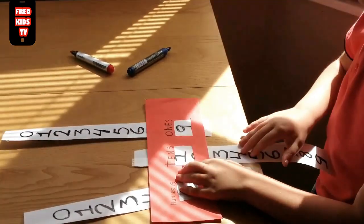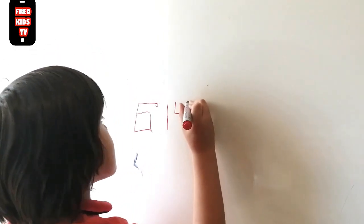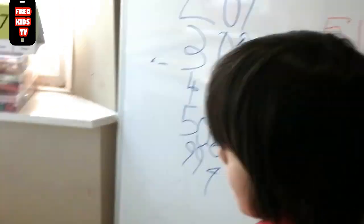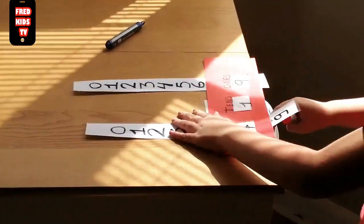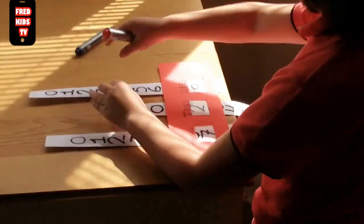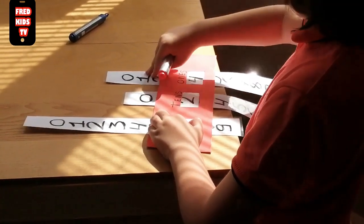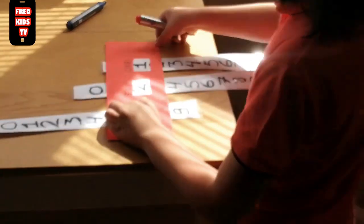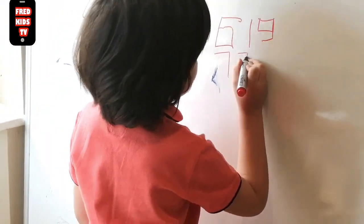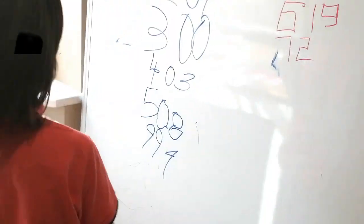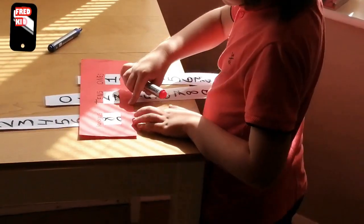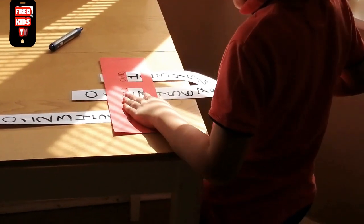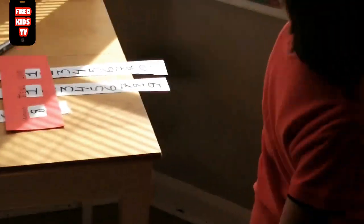Six hundred and ninety — good, put that there. Next number is seven hundred and twenty-one. Next one is eight hundred and eleven.